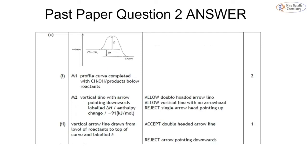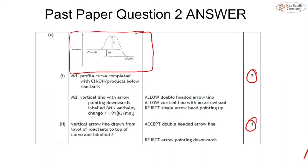Here's an example from the mark scheme of what it should look like, giving you two marks plus one mark for the last question. That's it for rates of reaction for triple. It's not a lot to cover but it is important that we know how to draw these diagrams. Check back later for another video on rates of reaction for double or any other content you might need help with.